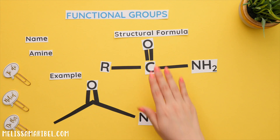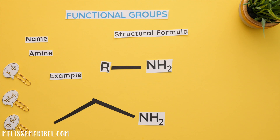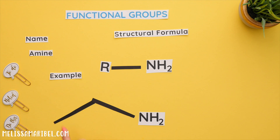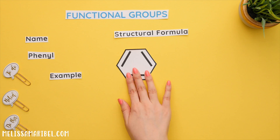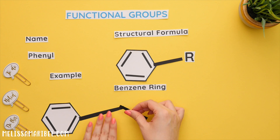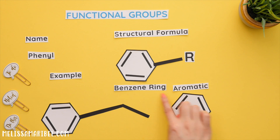An amide has a nitrogen attached to the carbon that is double bonded to the oxygen. An amine still has nitrogen but it does not have a carbon double bonded to an oxygen. To remember the difference between an amide and an amine, it's hidden in the name — an amine has the minimum amount of atoms, so it's the one without the oxygen. This is a phenyl group where a benzene ring is attached to an R group. Note another functional group name is aromatic, which describes a benzene ring.